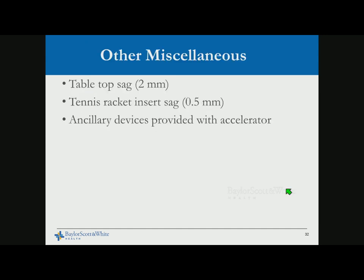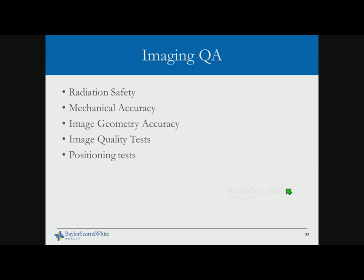Other issues include table sag, table transmission, and additional devices like RPM respiratory gating systems. We have many task group reports piecemealing each component, but at acceptance testing it is challenging to hold the vendor accountable for these. When you have additional devices like RPM, knowing which recommendations to follow is unclear.